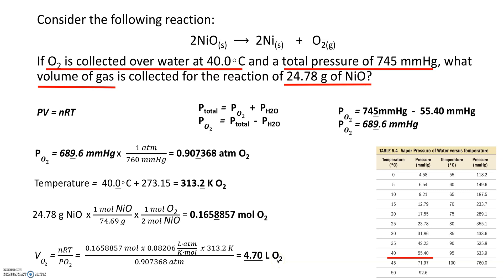I hope you enjoyed this problem-solving session. This is very similar to many of your homework problems — it's a great problem because it combines the ideal gas law, Dalton's law of partial pressure, using the vapor pressure of water table to determine the amount of gas collected over water, and also incorporates stoichiometry, which is the nuts and bolts of chemistry. Thanks for watching!